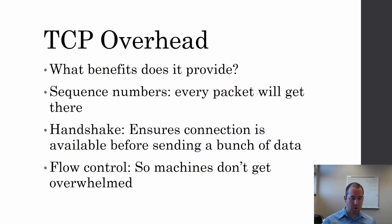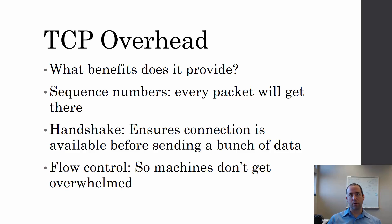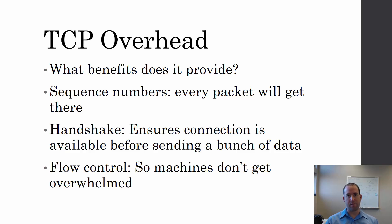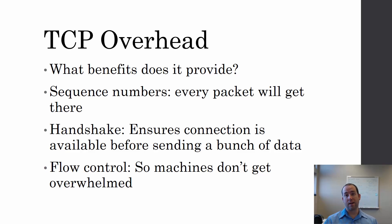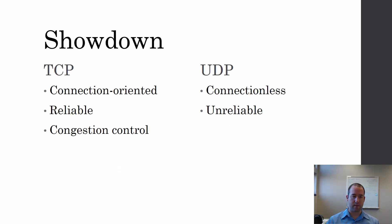Finally, flow control so machines don't get overwhelmed. The window size is adjustable — a smaller window size reduces the amount of data the server has to deal with at one time. If a server is very busy, it might shrink those window sizes for its connections. If it's not so busy, it can increase the window sizes and allow data to come in a little bit faster.